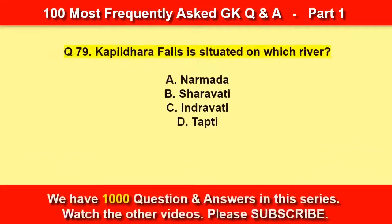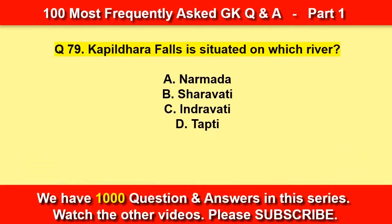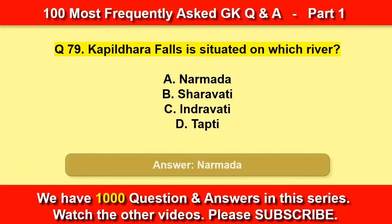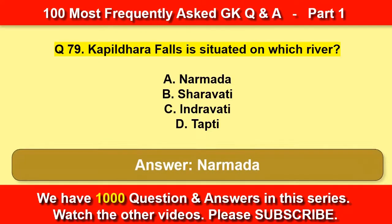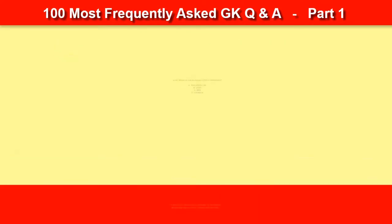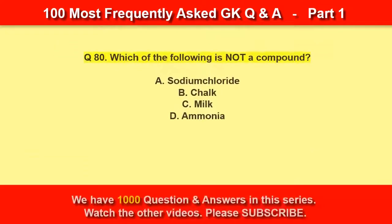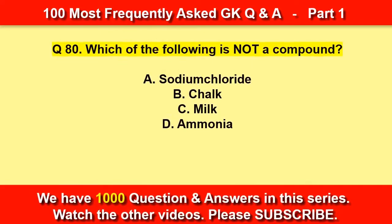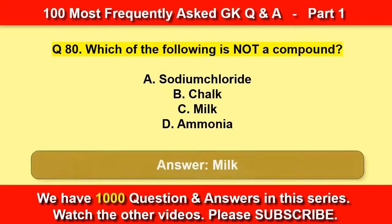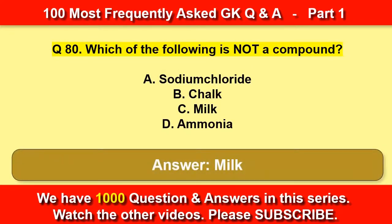Kapil Dhara Falls is situated on which river? Narmada. Which of the following is not a compound? Milk.